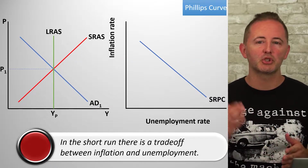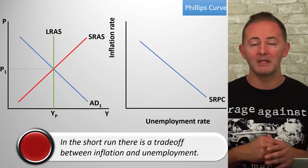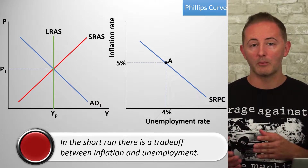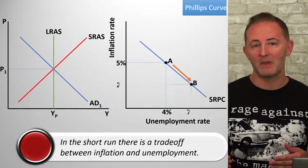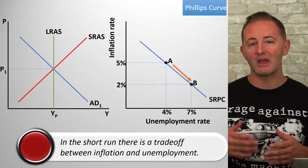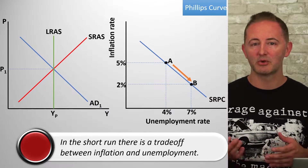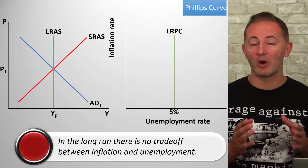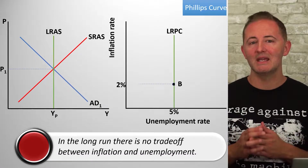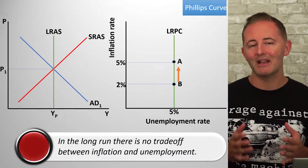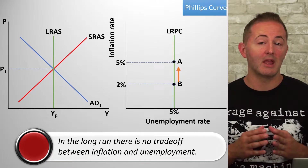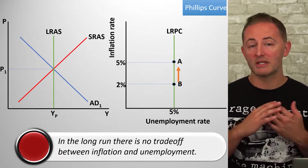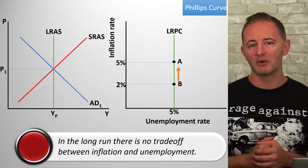This shows us that there's a trade-off between inflation and unemployment in the short run. At point A, there's a low unemployment rate but a higher inflation rate. If we move down to point B, unemployment has risen while inflation has fallen. The long-run Phillips curve, or LRPC, is vertical, showing that there is no trade-off between inflation and unemployment in the long run. A higher inflation rate causes no reduction in the unemployment rate.